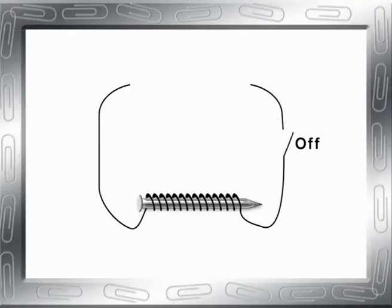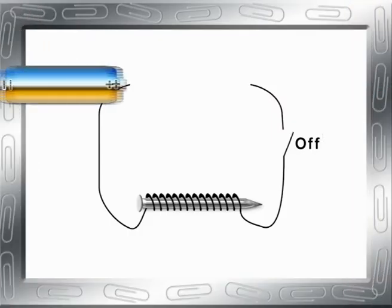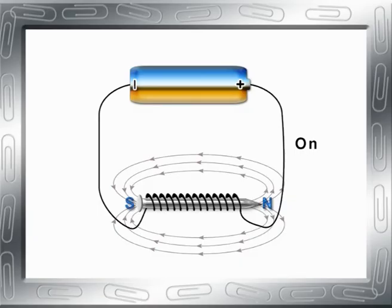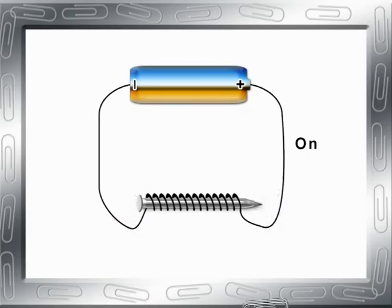Take a coil of wire and a battery, connect them up, and you'll see the principles of magnetism still apply. Only now they're magnified.